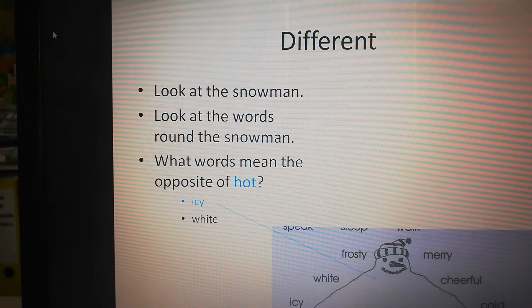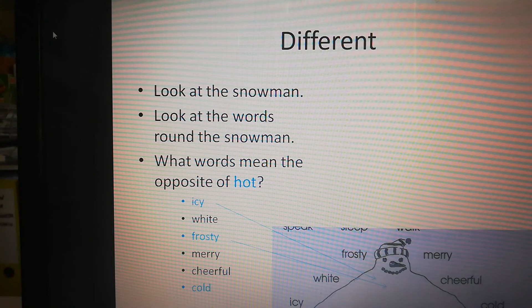White? Nah. Frosty. Yeah. Frosty is cold. It's opposite of hot. Merry? Nah. Cheerful? No. Just says if I'm happy. Cold. That's right. So cold as well you write in the snowman. So icy, frosty and cold are the opposite of hot and you write them in the snowman. That's right.